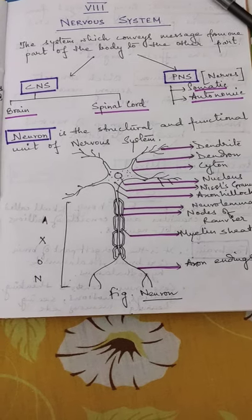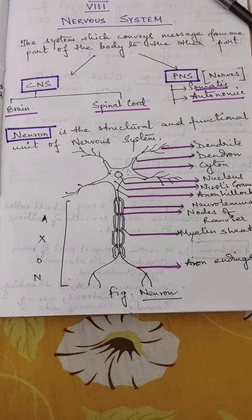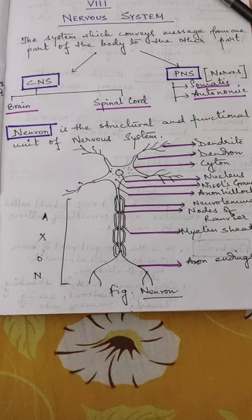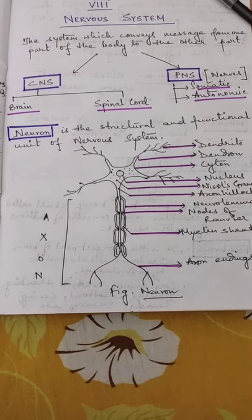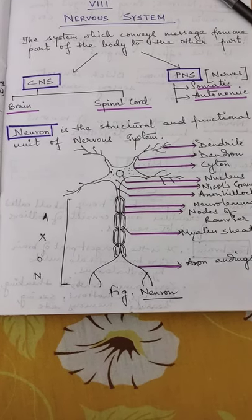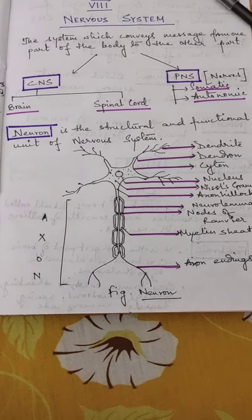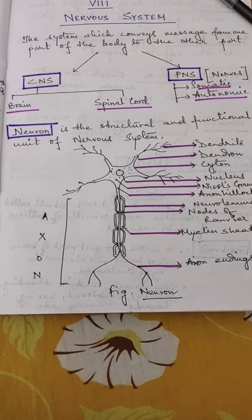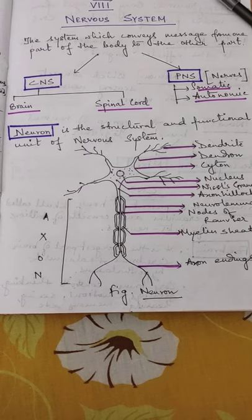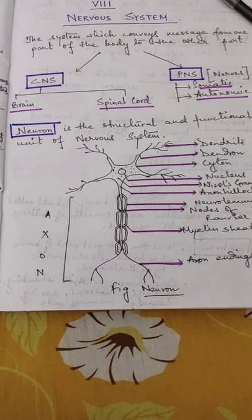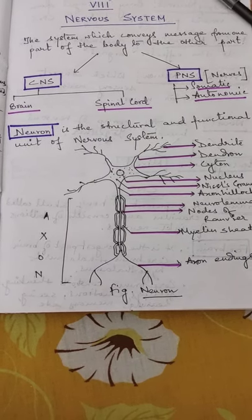Hello students, now this is our online bio class for Class 8. In the last two classes, I discussed the control and coordination system, specifically the endocrine system and hormones. Today I am going to start with the second part of that chapter, the nervous system.